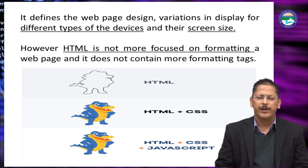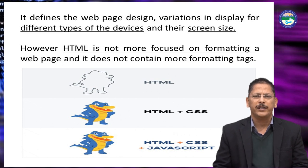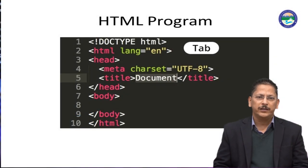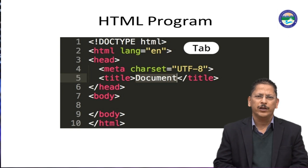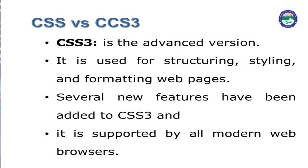JavaScript is very important. While HTML displays just a picture, JavaScript makes it dynamic — that is why we call it DHTML. CSS3 is the more advanced version of CSS. It is used for structuring, styling, and formatting web pages. Several new features have been added with CSS3, and it is supported by all modern web browsers.